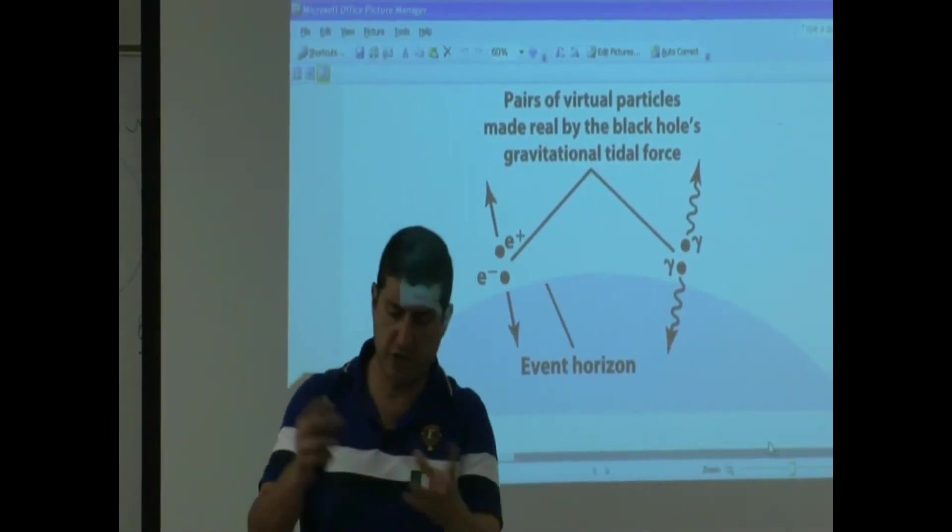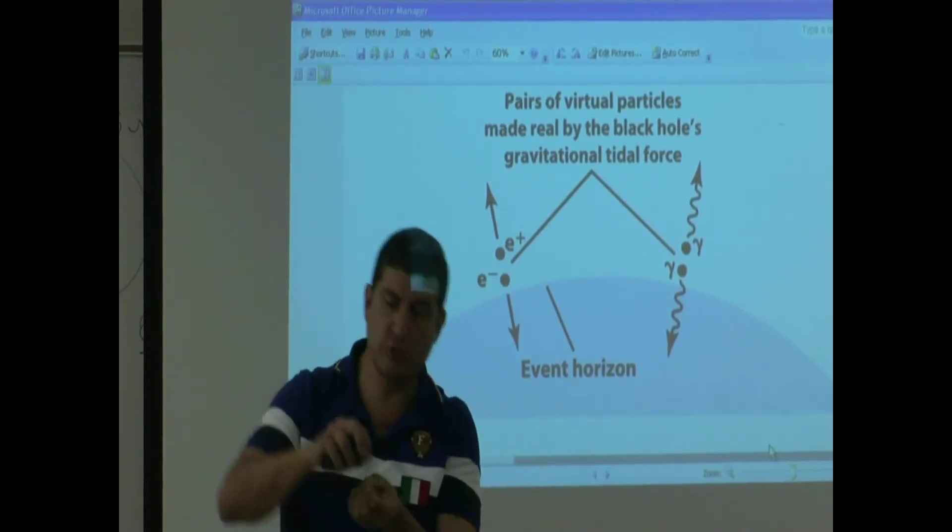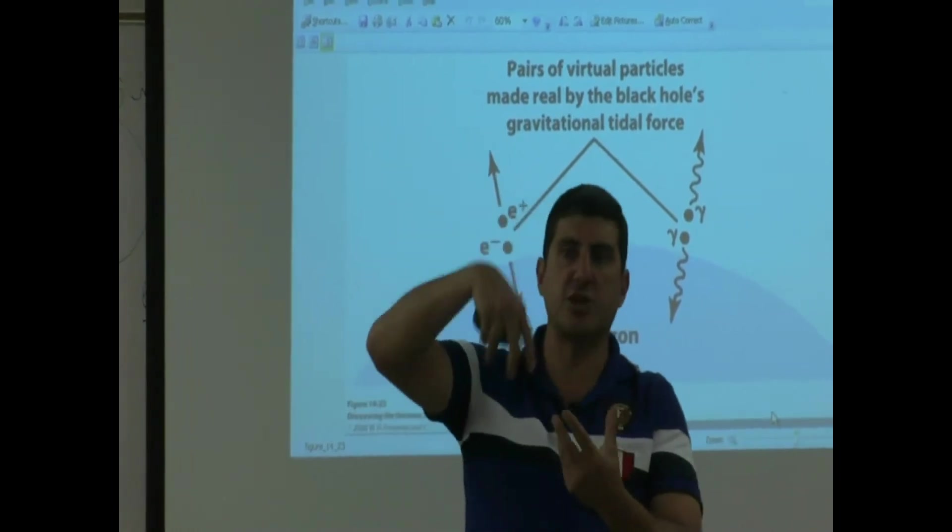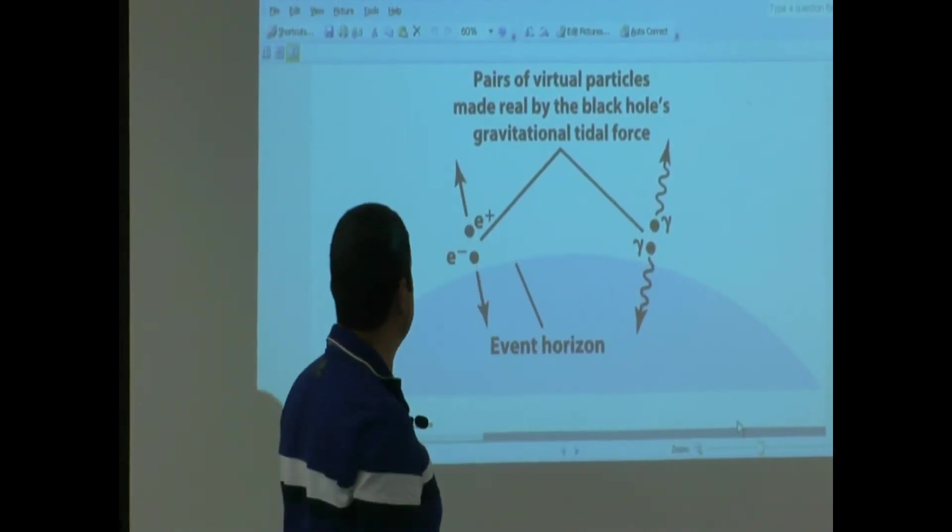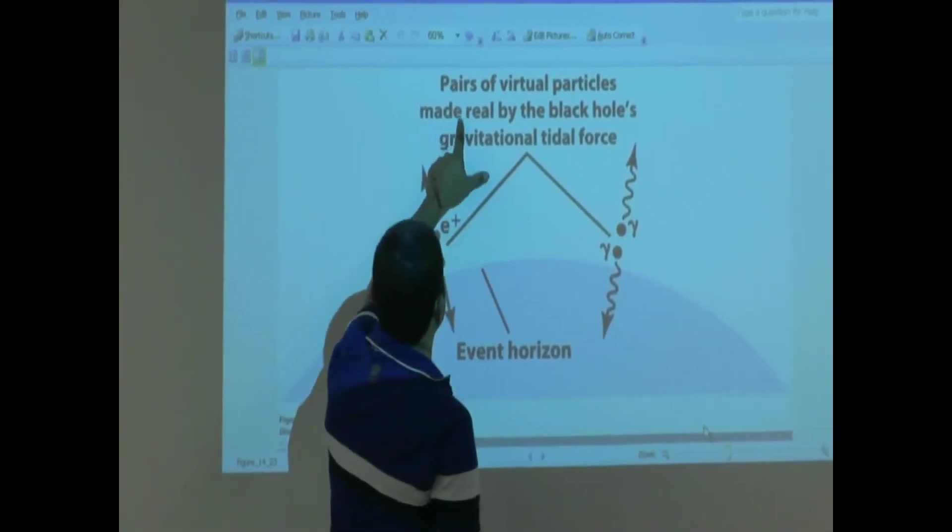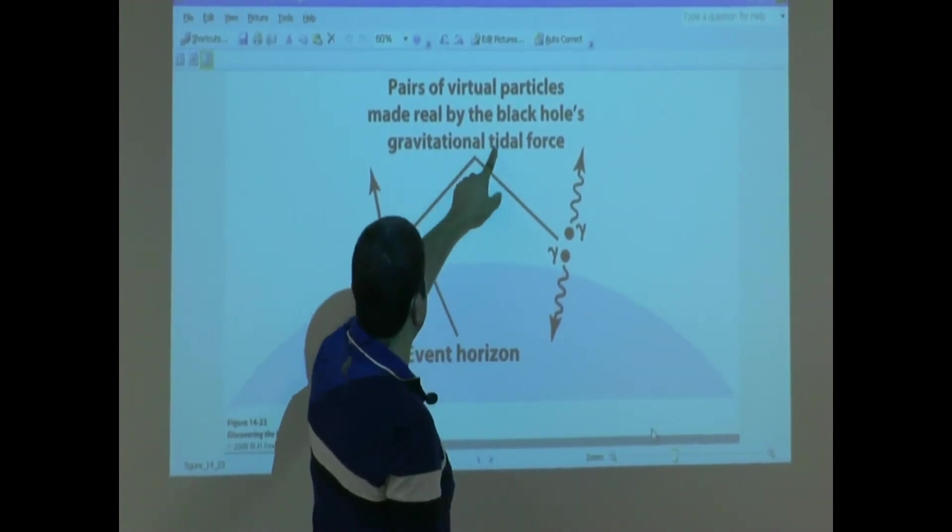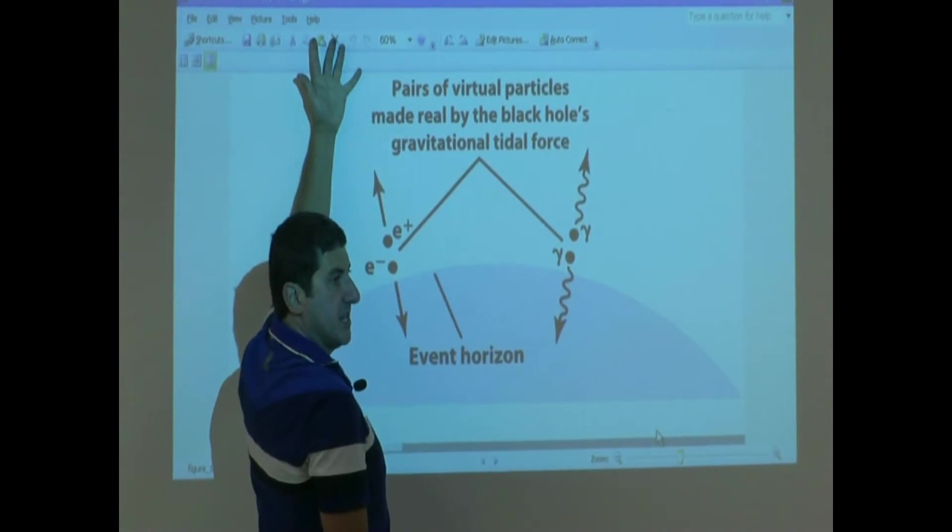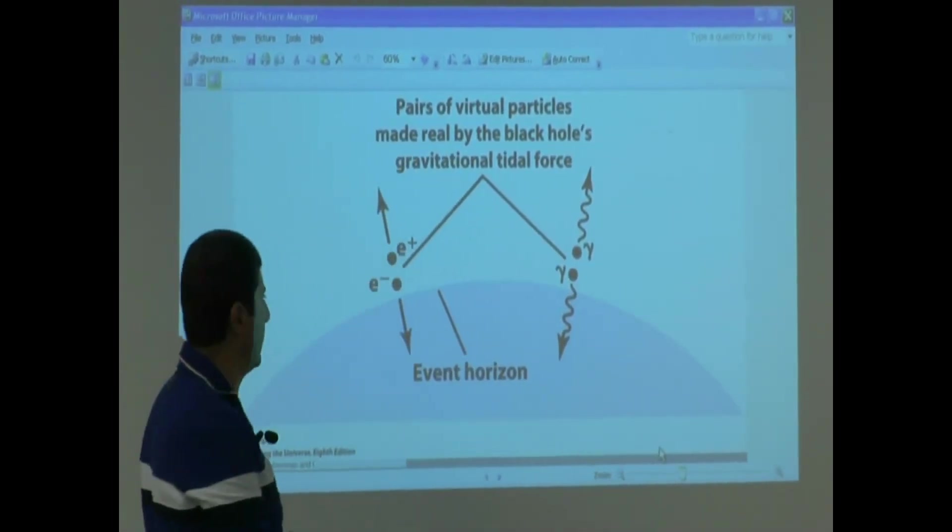One of them goes in. One of them goes out. One of them goes in. One of them goes out. The one that goes out is the radiation that we see emitted from the black hole. Pairs of virtual particles made real by the black hole's gravitational tidal force. And then the black hole emits this energy and then eventually it radiates away its mass.